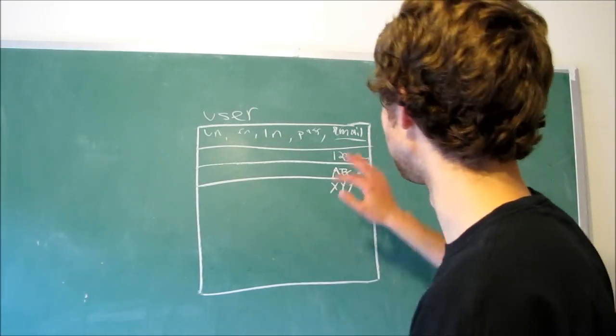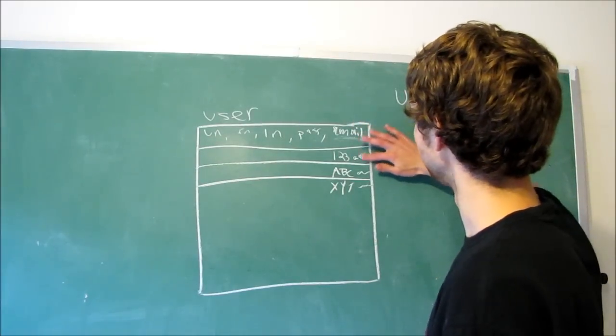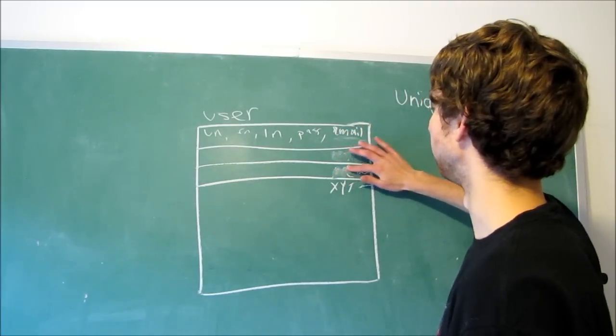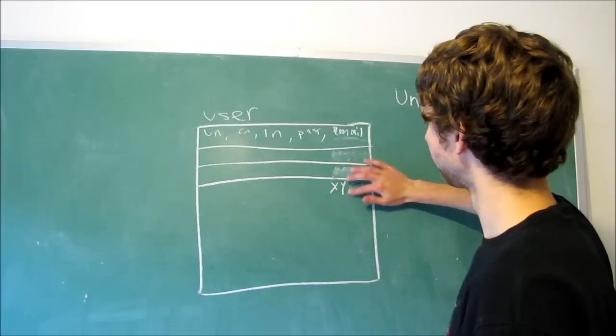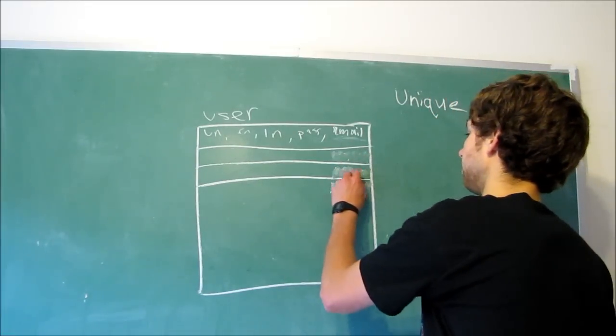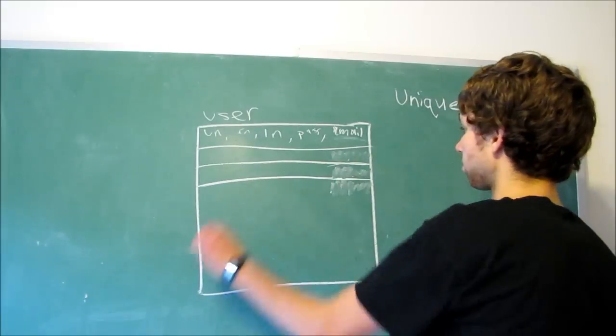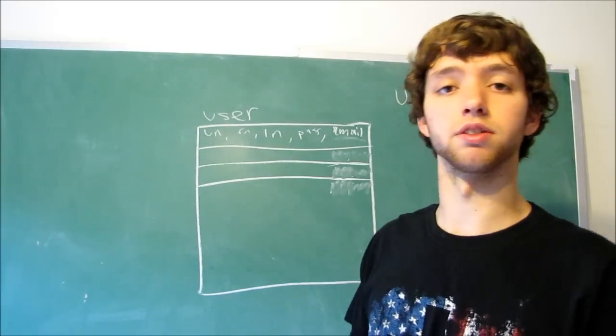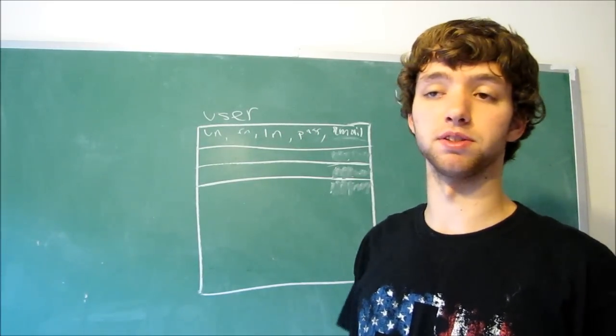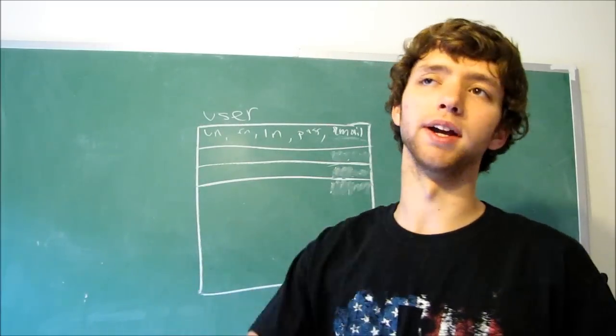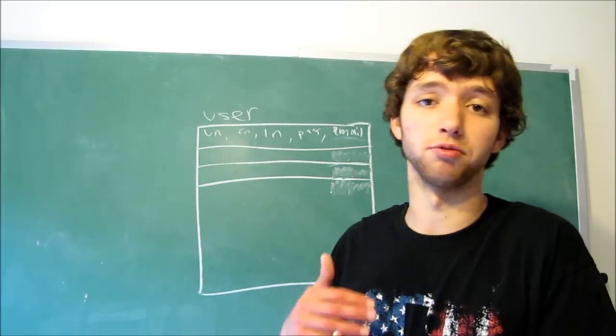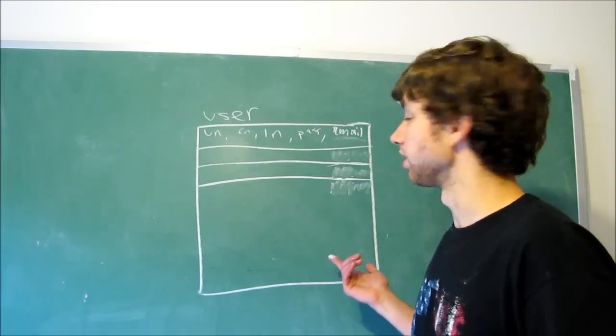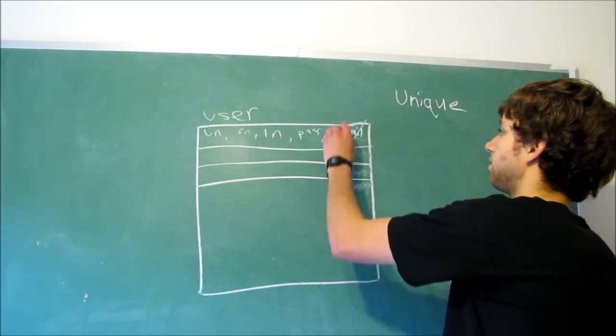Alright, so what is another example of a key that we could use in this table? Let's get rid of this email. Let's say we're not using the email anymore. And let's say the website allows multiple emails from different people. So, like, if my mom signed up and then I wanted to sign up, I could use my mom's email. So we have two people from the same email.